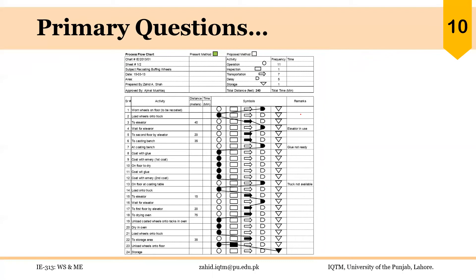We can get similar information from another flow process chart as well. In this case, there is a lot of delay — five times — and while we do not have the time recorded for each delay, the reason for the delay is written in the remarks column. So we can critically analyze using this information, or we may use another tool such as a fishbone diagram to find the root causes of these delays if required. There is also a lot of transportation taking place, so we can ask whether we can reduce the distance the part is traveling by improving the layout or flow.